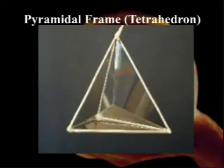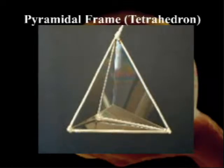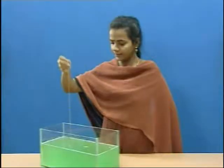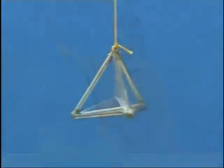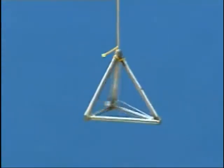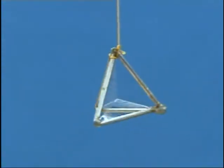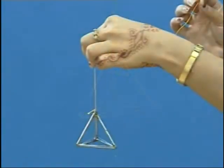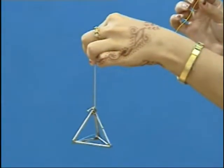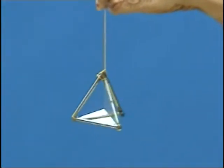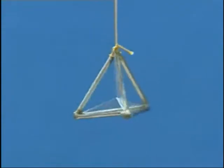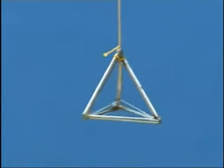Now let us try one more shape. This is called a pyramidal frame, or tetrahedron shape. It is just like a triangular base with one more vertex. It is in the form of a pyramidal frame, and a perfect point will be formed at the point of intersection of the layers. All the layers will be in contact with each other.